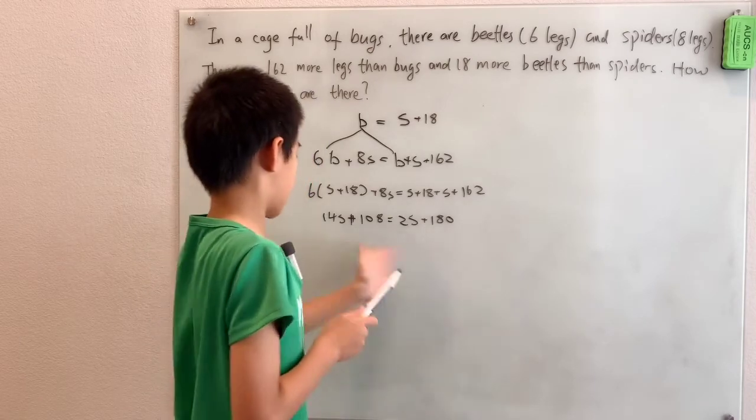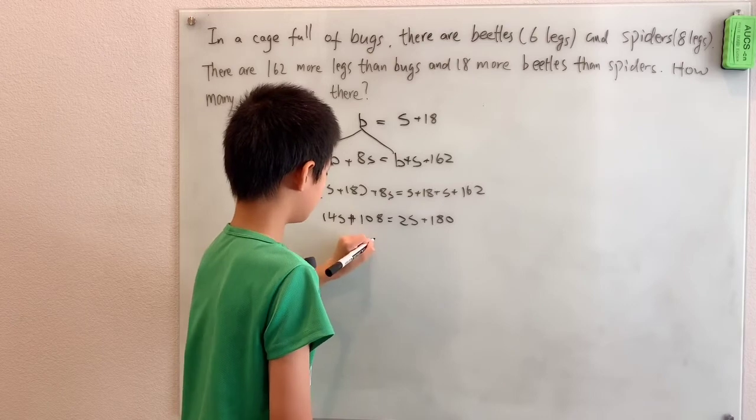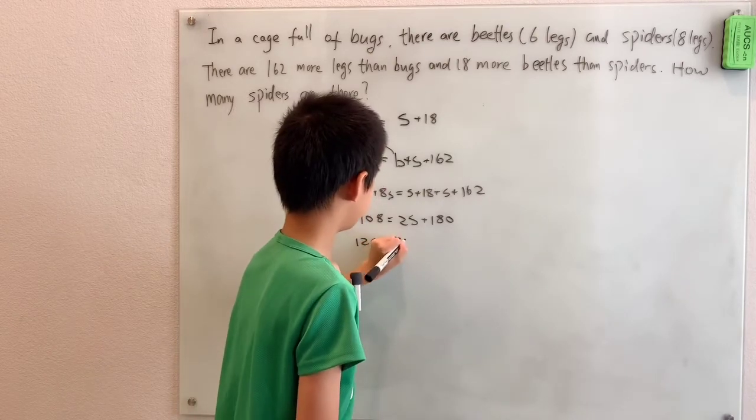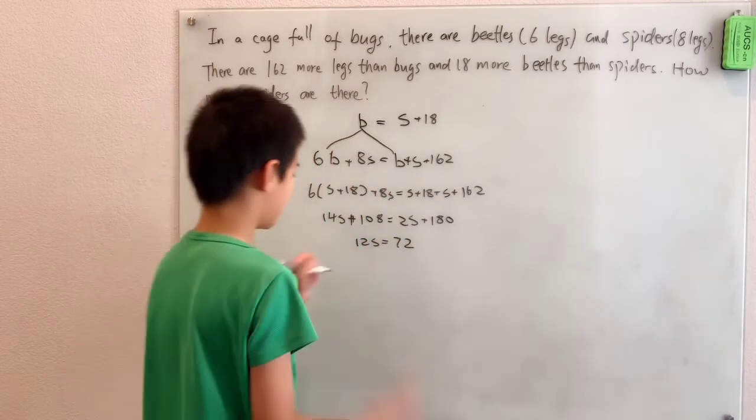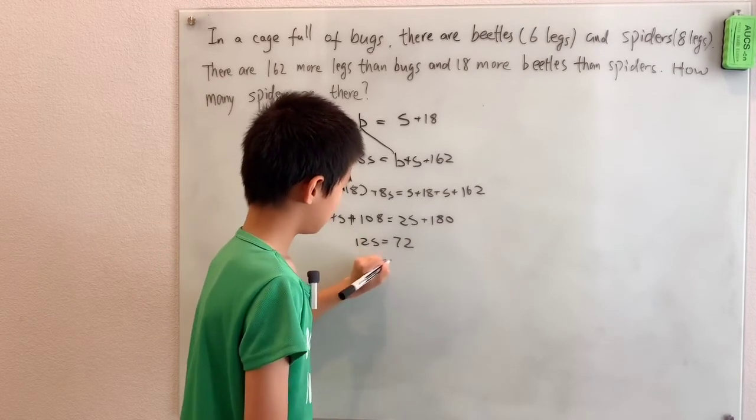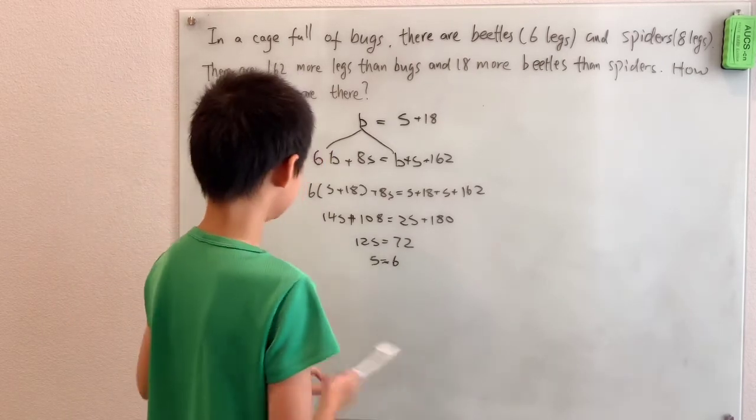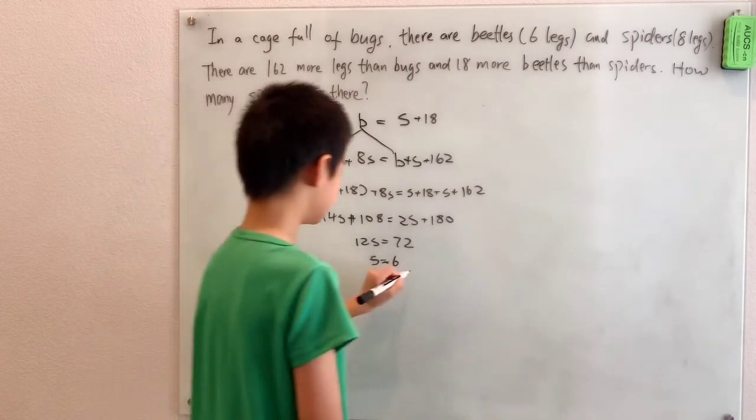Now finally, subtracting 108, subtracting 2S, we have 12S equals 72. Dividing by 12, we have S equals 6. And sure enough, we want the number of spiders, and S is the number of spiders, so we have our answer.